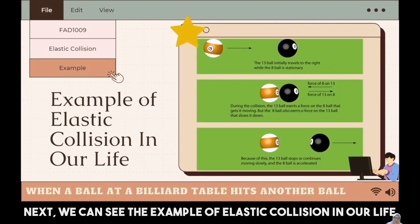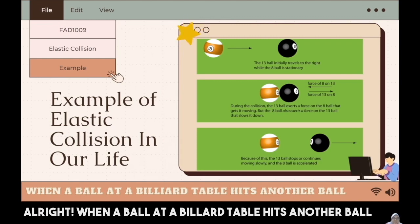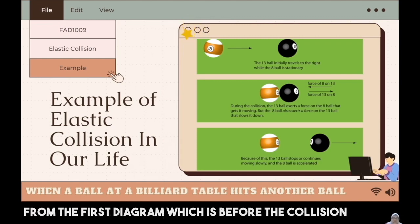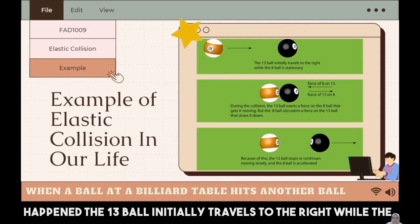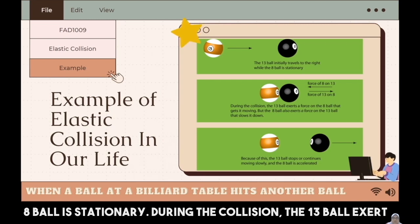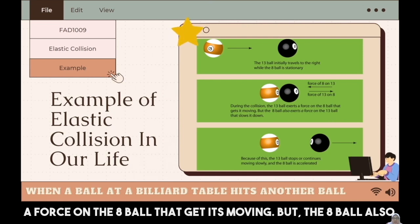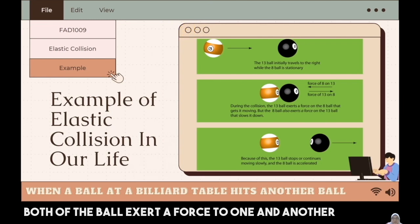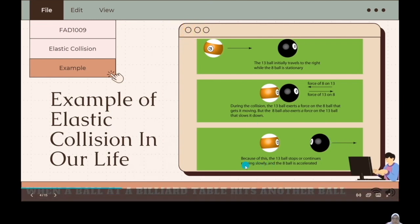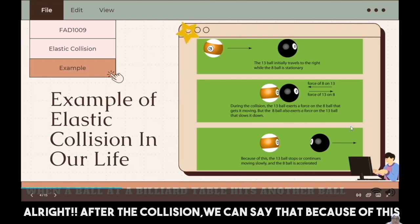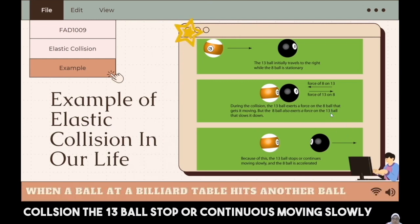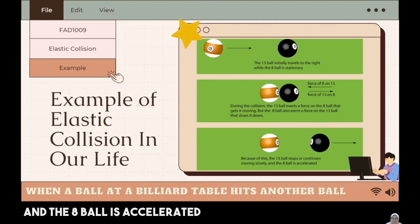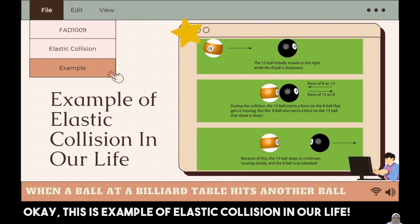We can see an example of elastic collision in our daily life. When a ball at the billiard table hits another ball: before the collision, the 13 ball initially travels to the right while the 8 ball is stationary. During the collision, the 13 ball exerts a force on the 8 ball that gets it moving, but the 8 ball also exerts a force on the 13 ball that slows it down. After the collision, the 13 ball stops or continues moving slowly, and the 8 ball is accelerated. This is an example of elastic collision.